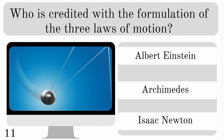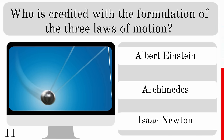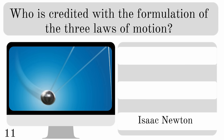Who is credited with the formulation of the three laws of motion? Is it Albert Einstein, Archimedes or Isaac Newton? And this one is Isaac Newton.